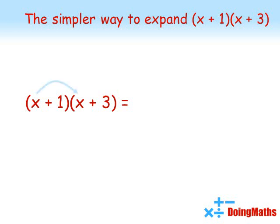We're going to take the X in the first bracket and multiply by the X in the second bracket to give us X squared. We're then going to multiply that first X by the 3 in the second bracket, so we've got plus 3X. Now we're going to do 1 times X is X and 1 times 3 is 3.